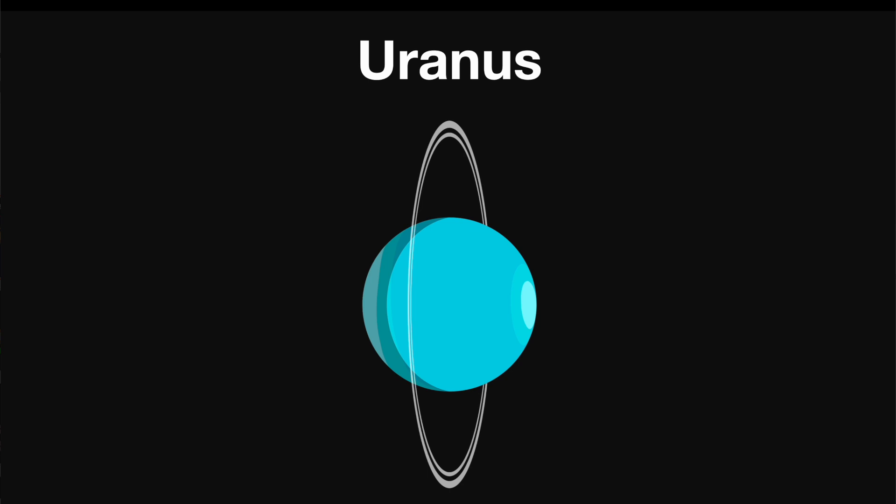Uranus is referred to as an ice giant, as it's very cold. It also contains atmospheric water and other ice-forming molecules. As it's a gas giant, Uranus also has faint rings encircling it. This planet has 28 moons.